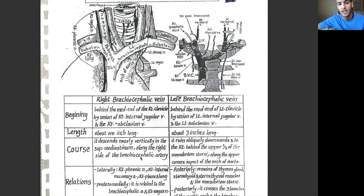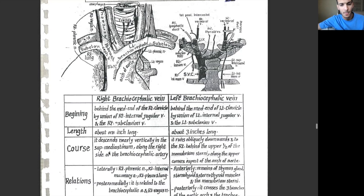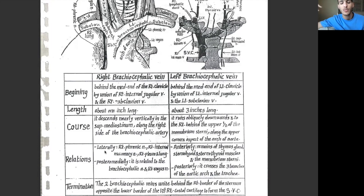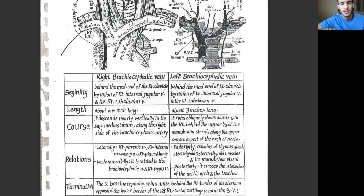The right brachiocephalic vein begins at the medial end of the right clavicle by the union of the right internal jugular vein and the right subclavian vein. It descends until it joins with the left brachiocephalic vein to form the superior vena cava. Laterally, it is related to the right phrenic nerve, the right internal mammary artery, and the right pleura and lungs. Posterior-medially, it is related to the brachiocephalic artery and the right vagus nerve.